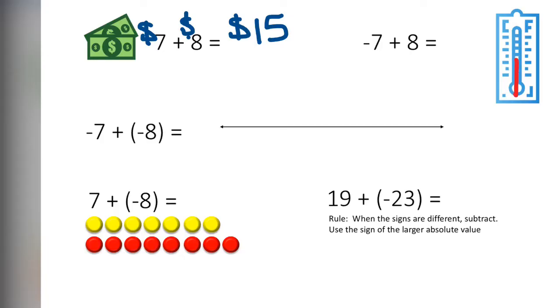What about a thermometer? If the temperature outside is negative 7 degrees, it has to go up all 7 to get to 0. So if it's negative 7 and you go up 8 degrees, you are now at 1 degree. Positive 1. The signs are different, so we subtract.